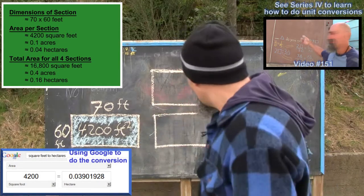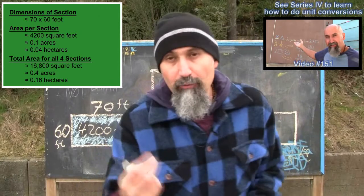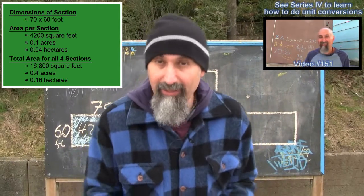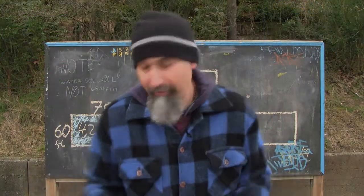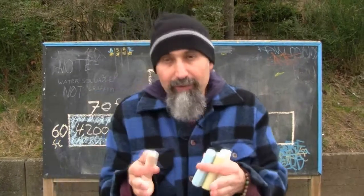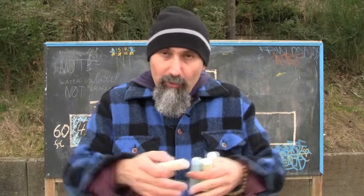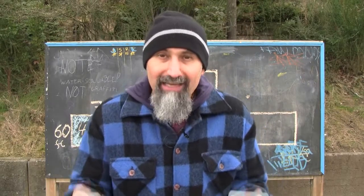They have four of these sections, so basically they're working with 0.4 acres or 0.16 hectares. That's how much farmland they have to work with. The way they're laying down their beds for the crops — that's where you plant your crop, they call that beds.